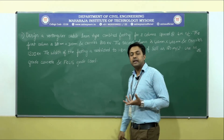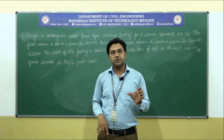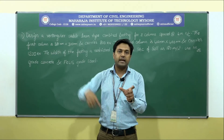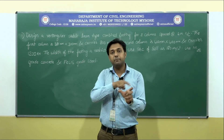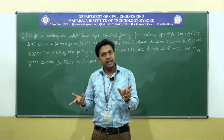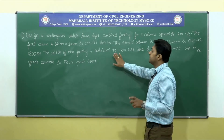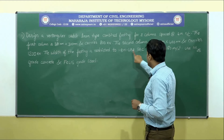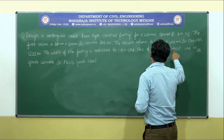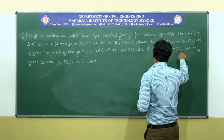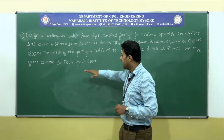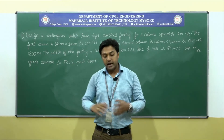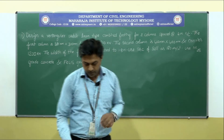The footing will be rectangular in shape — length into breadth. They have given the breadth; the length we need to calculate. In many questions they will not give the breadth and you can assume it, but in this question the width is restricted to 1.8 meter. Use SBC of the soil as 180 kN/m², M25 grade concrete, and Fe415 grade steel.